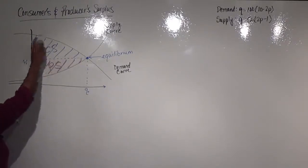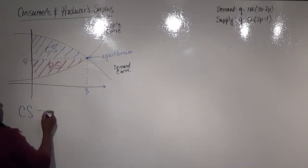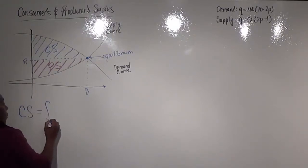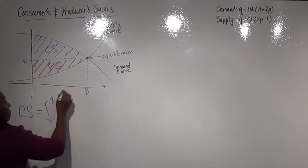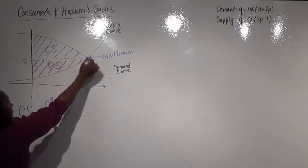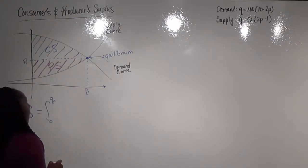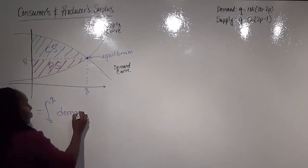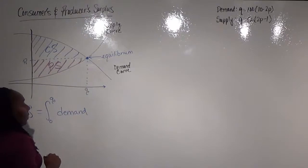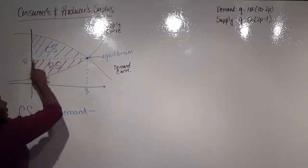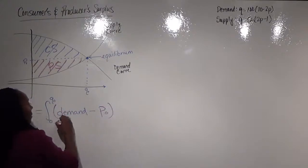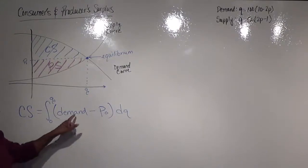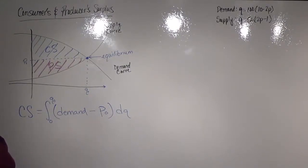If I'm looking at the blue region, our consumer surplus is going to be the integral from our start value, which is zero, to our equilibrium quantity — going out along the q-axis. It's our upper curve minus our lower curve. Our upper curve in this case is our demand equation, and our lower curve happens to be our equilibrium price. Notice this is in terms of q, so we want both of these equations or values to be in terms of q.